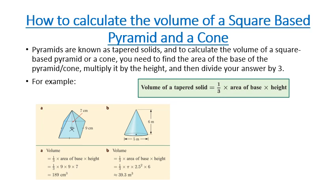The next two shapes are the square-based pyramid and the cone, both known as tapered solids that share the same formula. To find their volume, find the area of the base — for a square-based pyramid that's area of a square; for a cone, area of a circle — then multiply by the height and by one third. Example A: 9 times 9 times 7 gives 189 centimetres cubed. Example B: pi times 2.5 squared times 6 gives 39.3 metres cubed.